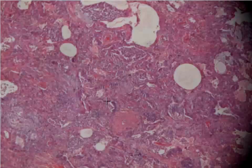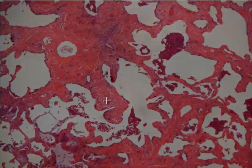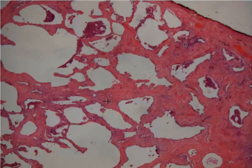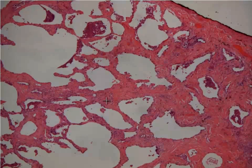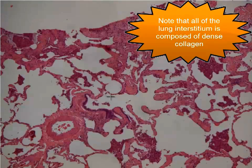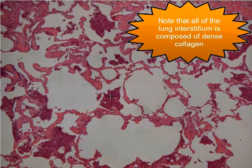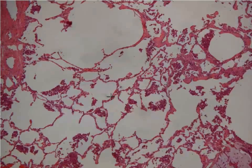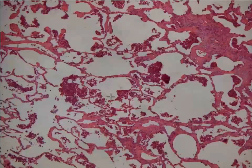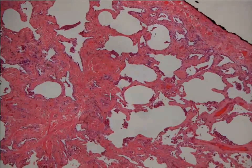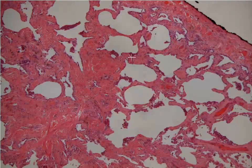What happens in that case is you end up with what we would call honeycomb lung. This is an example of a different slide, a different patient, but with the same disease — much more advanced. You can see that the alveolar spaces in this patient show temporal heterogeneity, with some areas looking okay, but in other areas the lung has been completely remodeled to honeycomb lung, where the alveolar spaces are large and cystically dilated and surrounded by these areas of dense fibrosis.